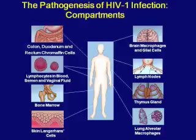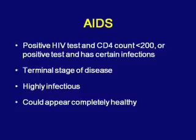The CD4 T-cell count refers to the type of cell that HIV infects and destroys, and it tells us how strong the immune system is. Normal levels are between 500 to 1500, and below 200 we say someone has AIDS. Low CD4 counts are also associated with certain diseases.